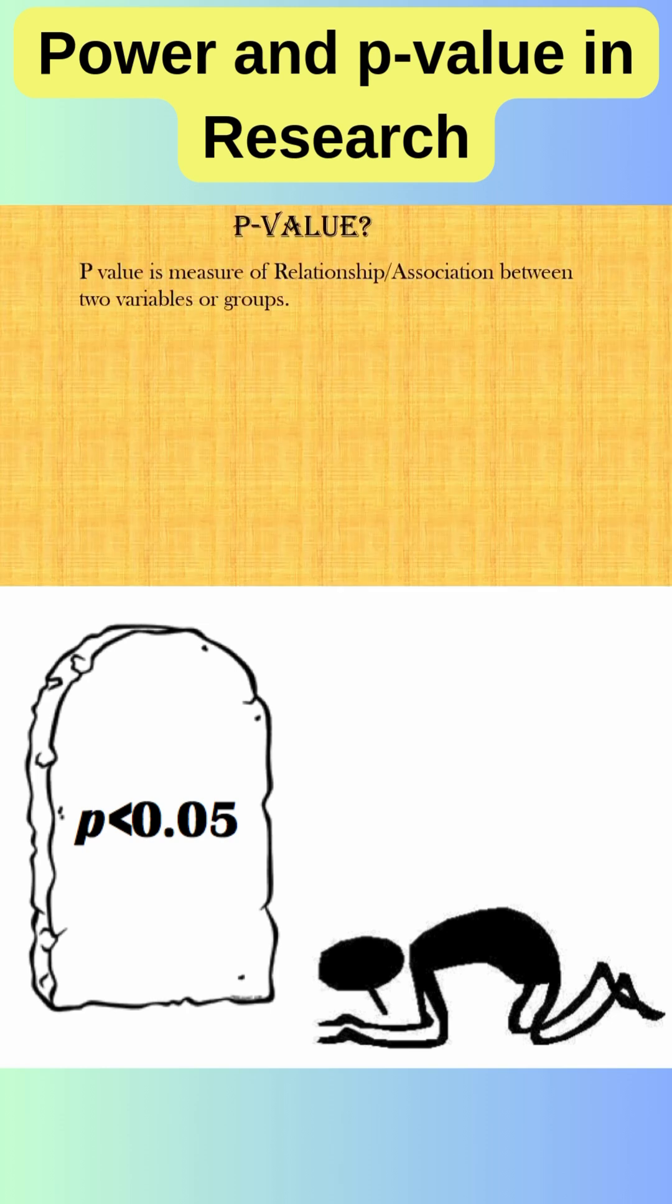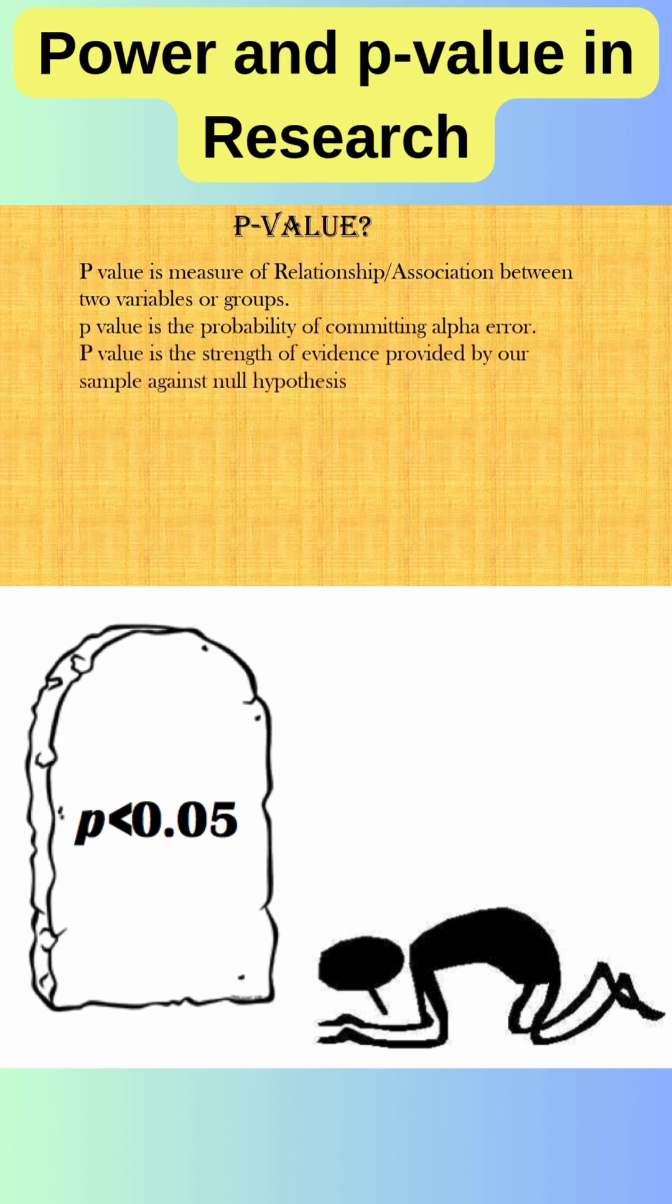P-value is a measure of relationship or association between two variables or groups. P-value is the probability of committing alpha error. P-value is the strength of evidence provided by our sample against null hypothesis in order to accept our alternate hypothesis.